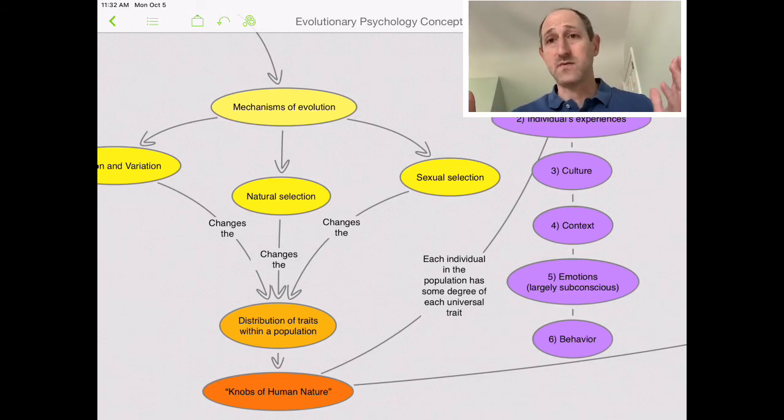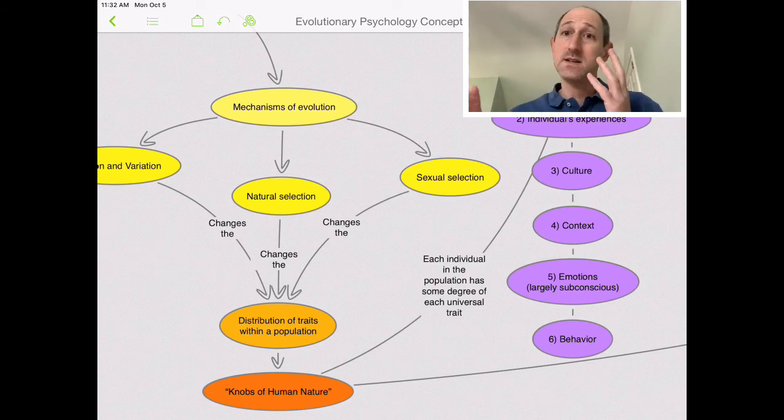That's a result of sexual selection where the peahens are selecting peacocks of a certain type. And we know that there's all kinds of ways that sexual selection can happen.